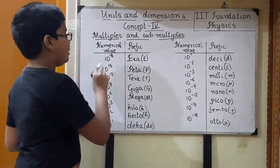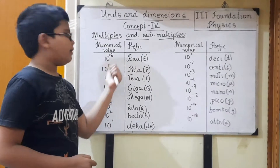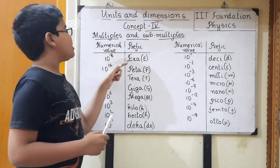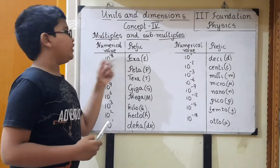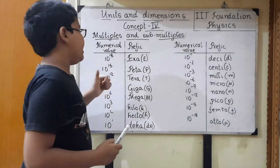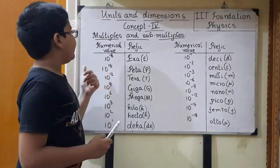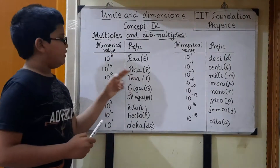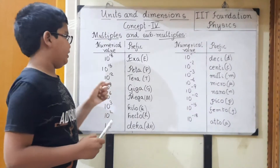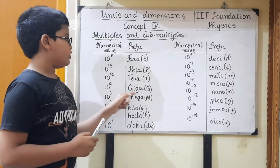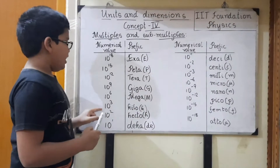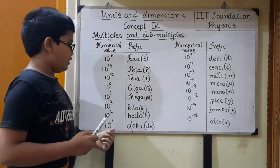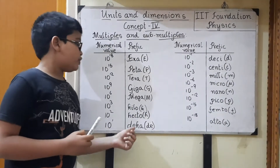Let's see what the multiples are. 10 power 18 is exa — if we want 10 power 18 meters, we can call it 1 exameter. We can use these multiples and sub-multiples for any assignment. 10 power 15 is peta — 10 power 15 meters equals 1 petameter. 10 power 12 meters equals 1 terameter. 10 power 9 meters equals 1 gigameter. 10 power 6 meters equals 1 megameter. 10 power 3 equals 1 kilometer. 10 power 2, which is 100, equals 1 hectometer. 10 power 1 meter equals 1 decameter, which is 10 meters.